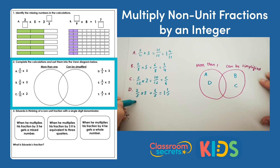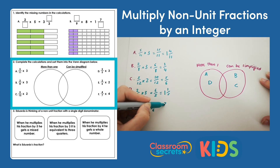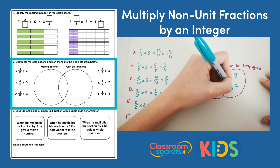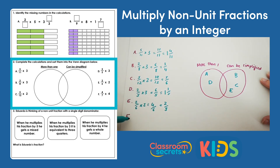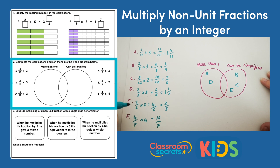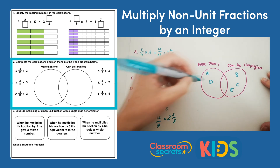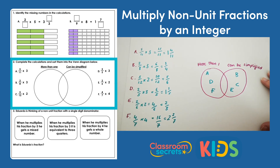E: 2 sixths times 2 is 4 sixths, which is the same as 2 thirds — it can be simplified, so e goes in the 'can be simplified' section. Finally, f: 4 sevenths times 4 is 16 sevenths, which is 2 and 2 sevenths, so f goes in the 'more than 1' section.